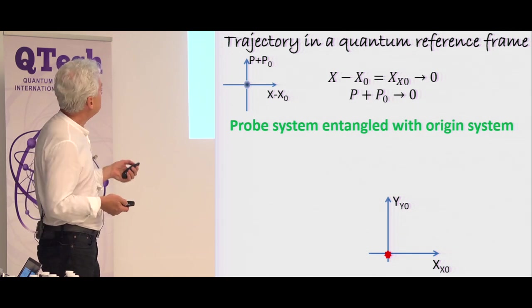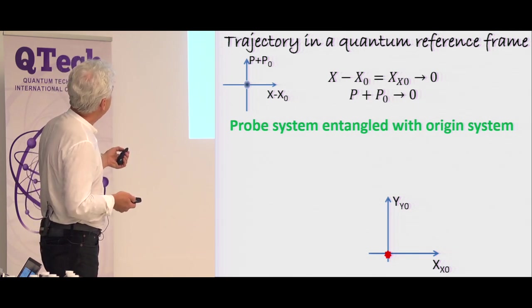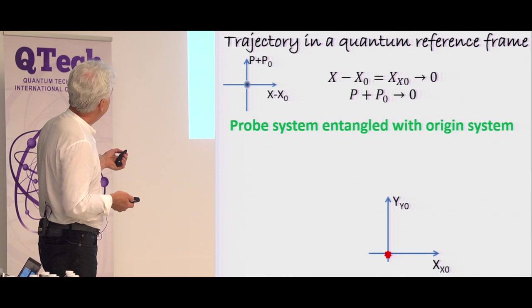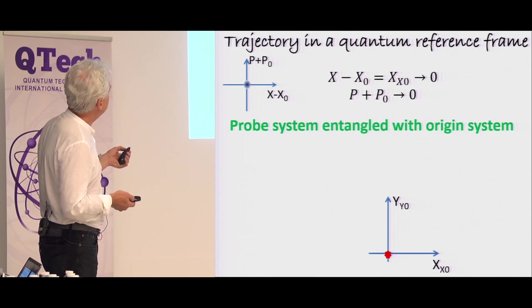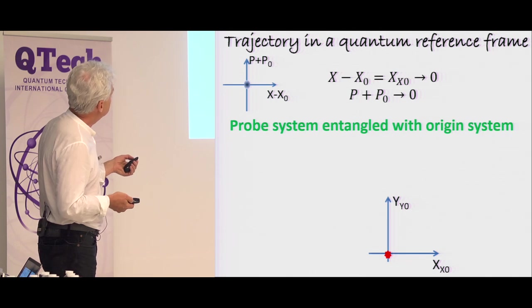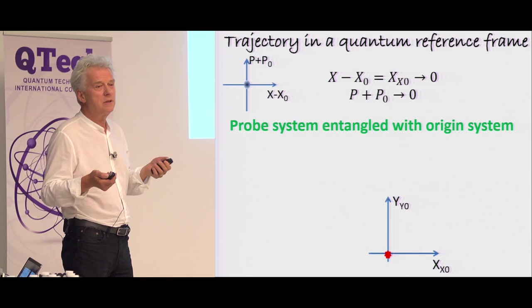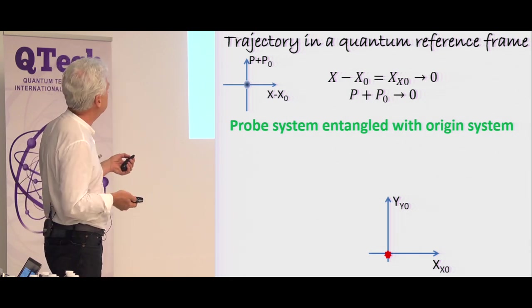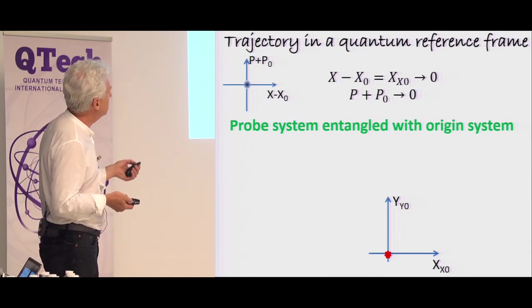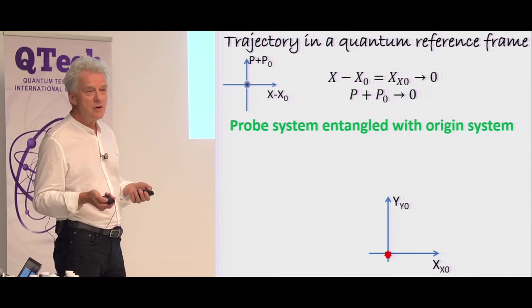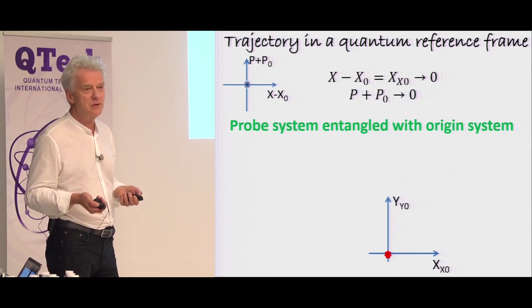Then you have your cake and you eat it. So let's see how it might work. Here is my function of interest, x, with respect to the reference frame x0. And also, there is a momentum. And we all know that there could be the EPR state, Einstein, Podolsky, Rosen entangled state, where this difference and this sum can go to 0 in their uncertainty because they're commuting operators.